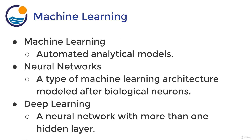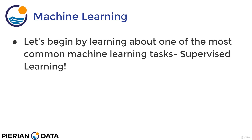As a final note, students sometimes get confused between machine learning, neural networks, and deep learning. To clarify: machine learning is a general term for automated analytical models. Neural networks are a specific type of machine learning architecture modeled after biological neurons. Deep learning is simply a neural network with more than one hidden layer — we'll discuss what a hidden layer actually is in the artificial neural network section coming up next. Let's go ahead and begin by learning about one of the most common machine learning tasks: supervised learning.